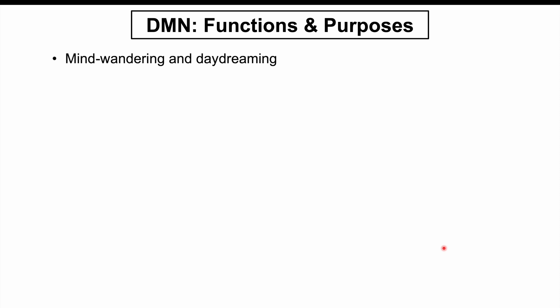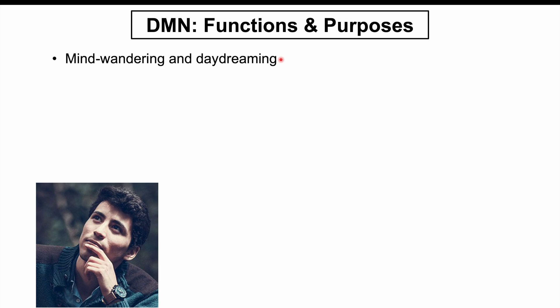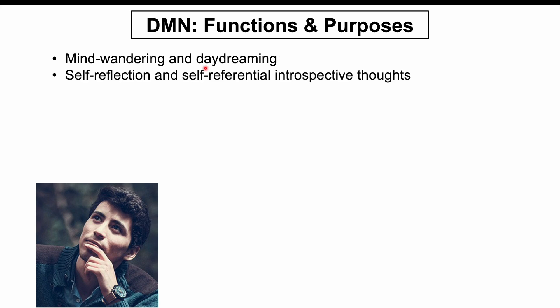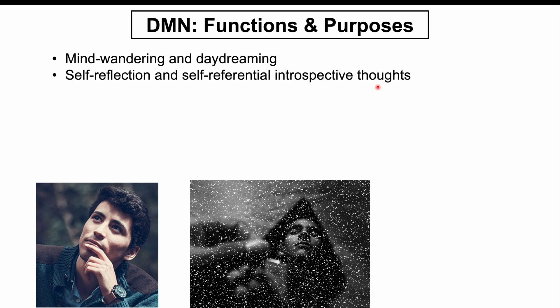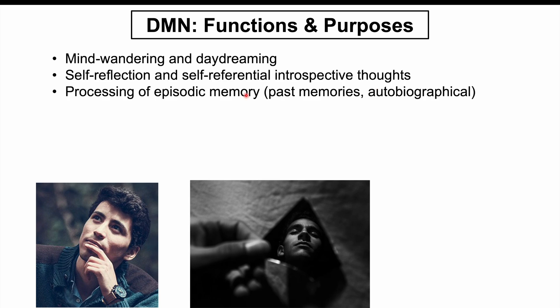One of the most important functions of this network is mind wandering and daydreaming — when we're not actively doing something and we let our mind wander, the default mode network is activated. Other important functions include self-reflection and introspective thoughts, such as thinking about yourself or mistakes you've made. Processing of episodic memory is also key, including recollecting past memories and especially autobiographical memories — things that happened to you personally in the past.